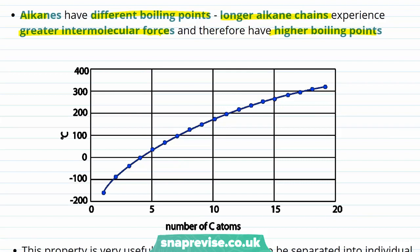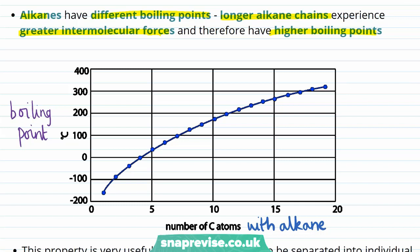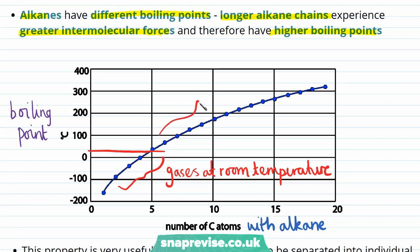We can see this in the graph here, which has the number of carbon atoms within an alkane on the x-axis and the boiling point in degrees Celsius on the y-axis. You can clearly see that the boiling point of an alkane increases with the number of carbon atoms. If we mark on approximately room temperature — around 20 degrees — on the graph, we can see that some alkanes boil below room temperature and are therefore gases, but longer alkanes boil above room temperature and are therefore liquids or solids.